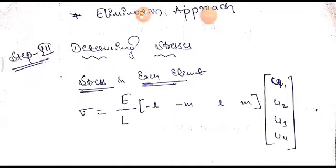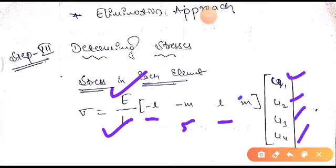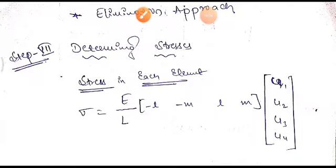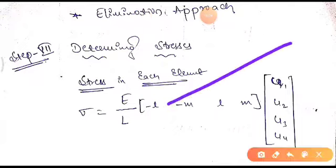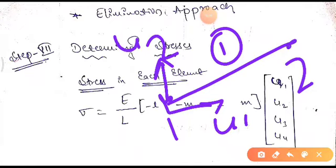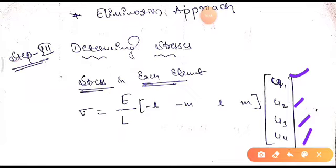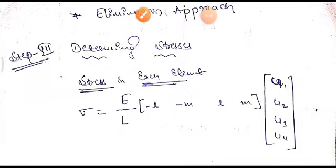The final step is to determine the stresses. Stress for the truss element is given by: stress = (E / L) × [-l  -m  l  m] × [u1, u2, u3, u4]ᵀ. Since the truss element has two nodes each with two degrees of freedom, we get a 4×4 stiffness matrix and a 4×1 displacement vector.